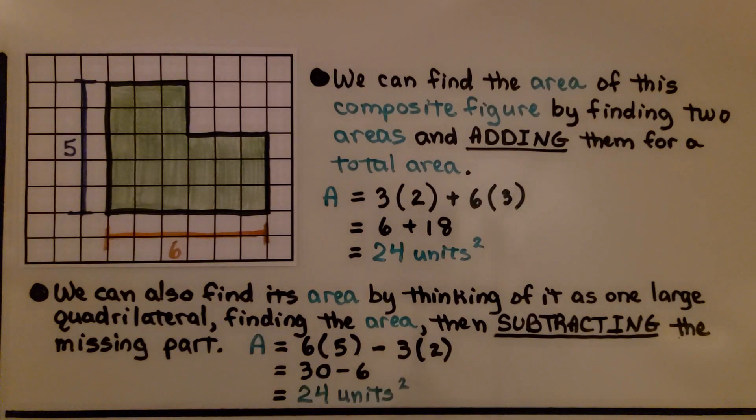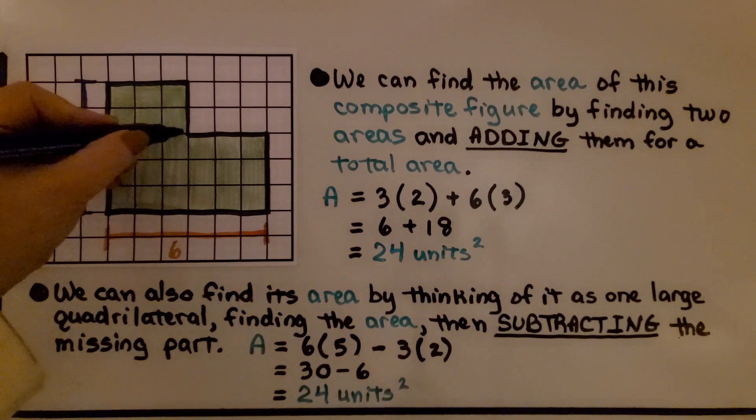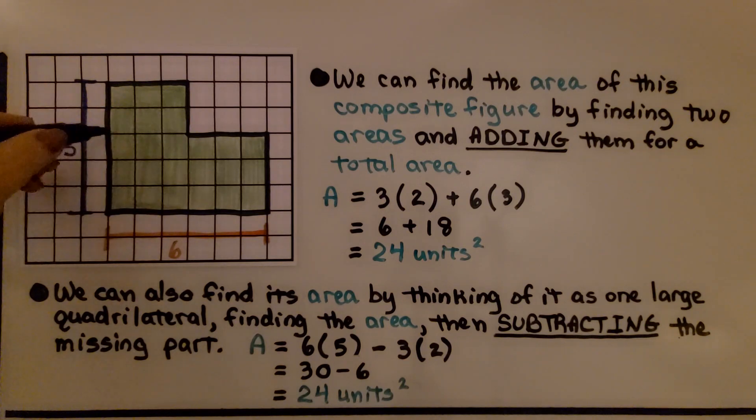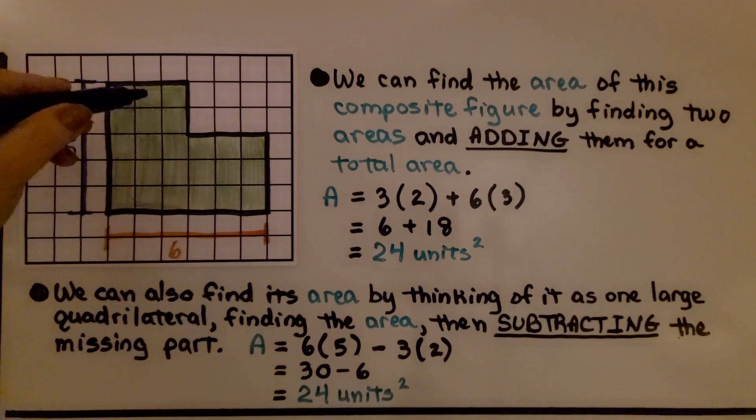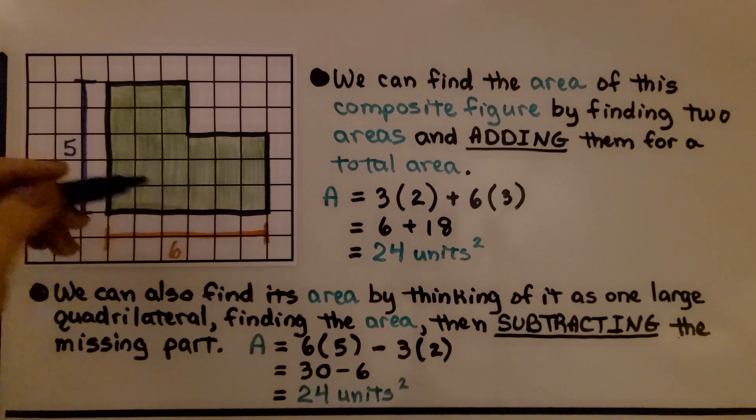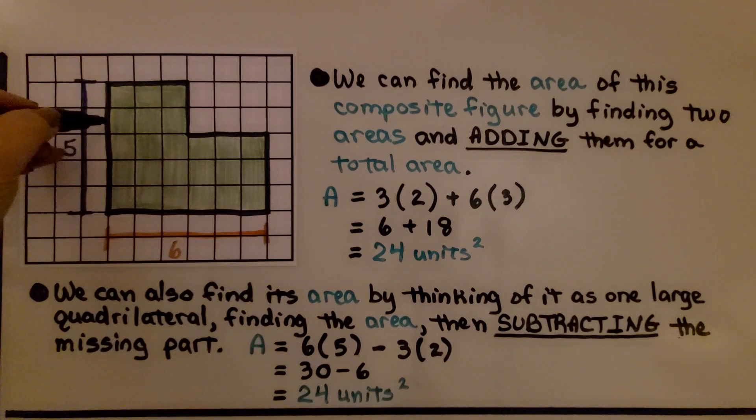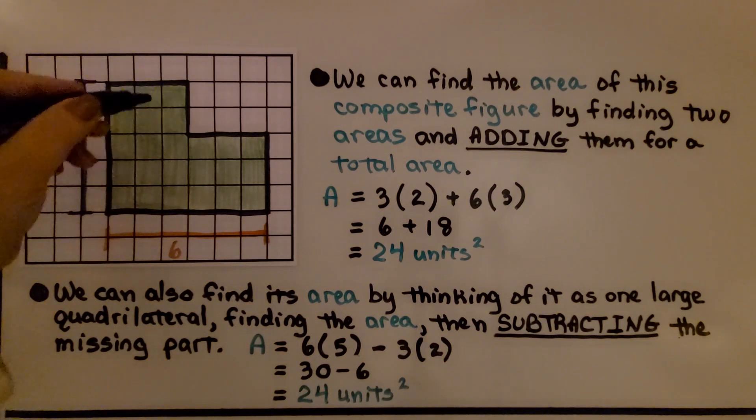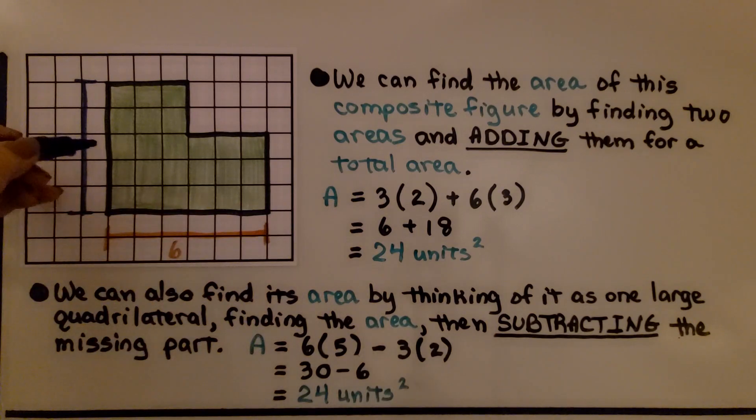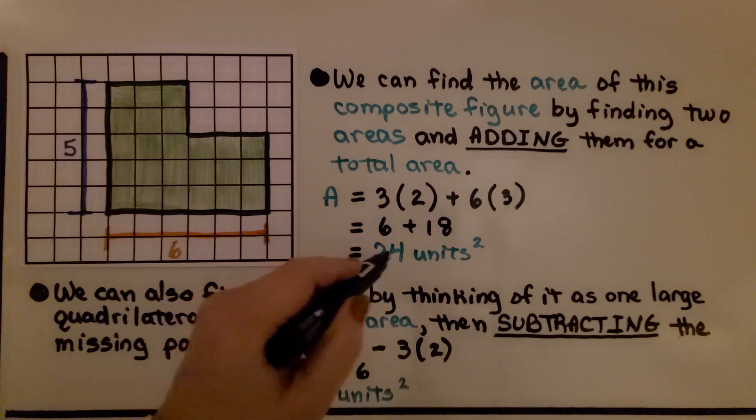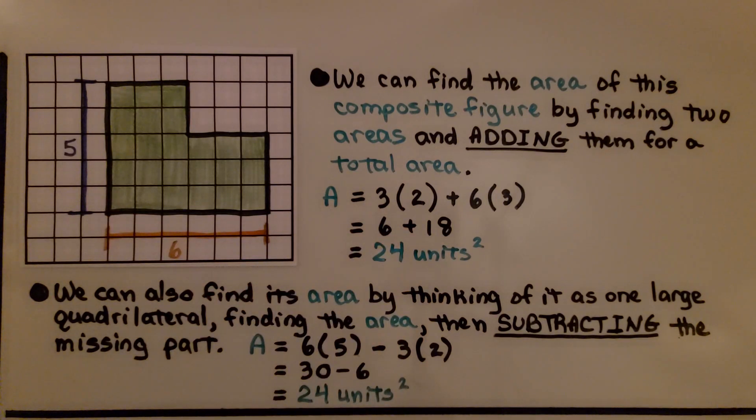We can find the area of this composite figure by finding two areas and adding them for a total area. We can separate it right here into this little rectangle and this big rectangle. We can do 3 times 2 for this area, which is 6. And we can do 6 times this 3, which is 18. We add them together and we get 24 units squared.